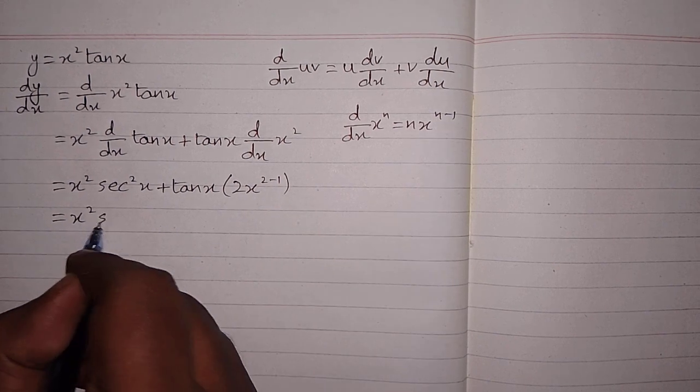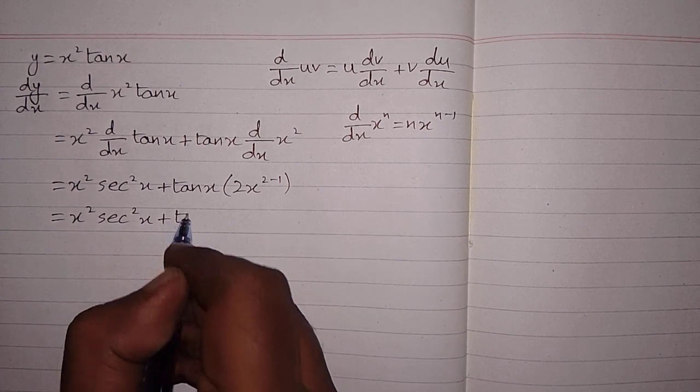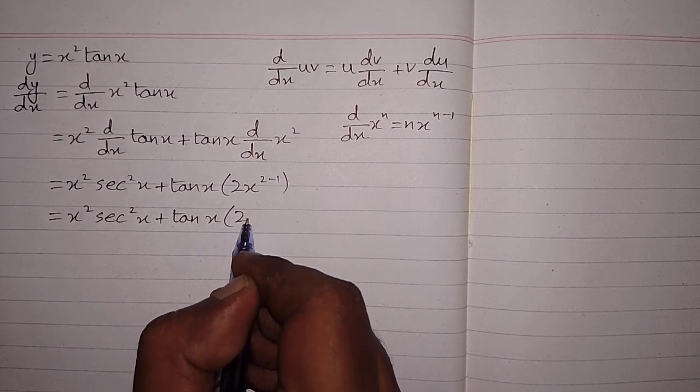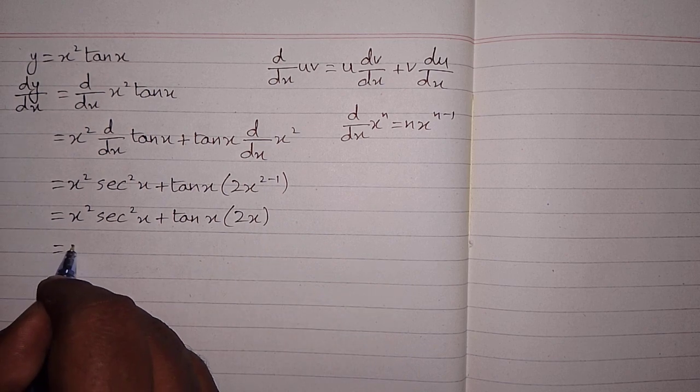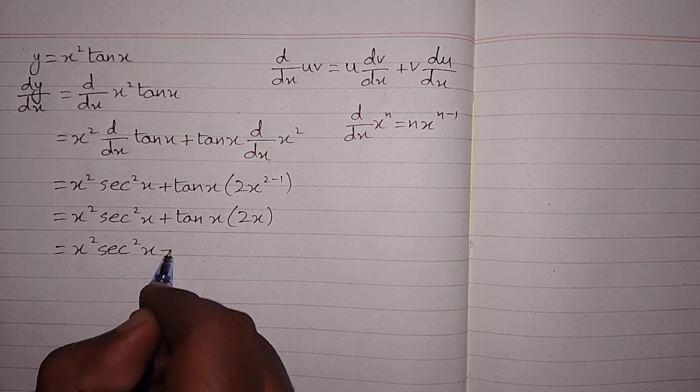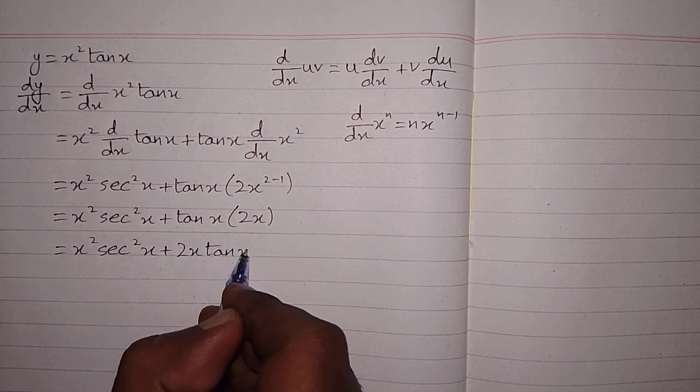Now we have x squared sec squared x plus tan x multiplied by 2x, because x to the power 2 minus 1 is x. And then this can be written as x squared sec squared x plus 2x tan x, and this is the required answer.